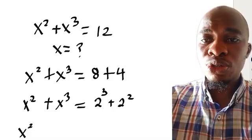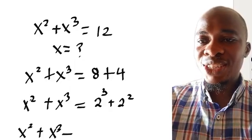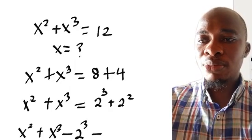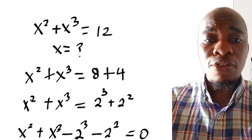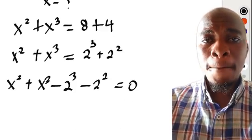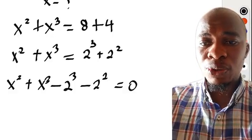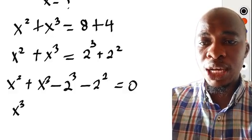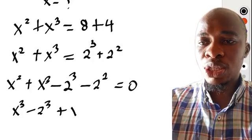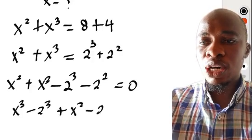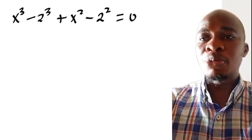From there we're going to have x to the power of 2 plus x to the power of 3 minus 2 to the power of 3 minus 2 to the power of 2, everything equals 0. Now from here, those with power 3 we take together, and those with power 2 we combine together, then equals 0.